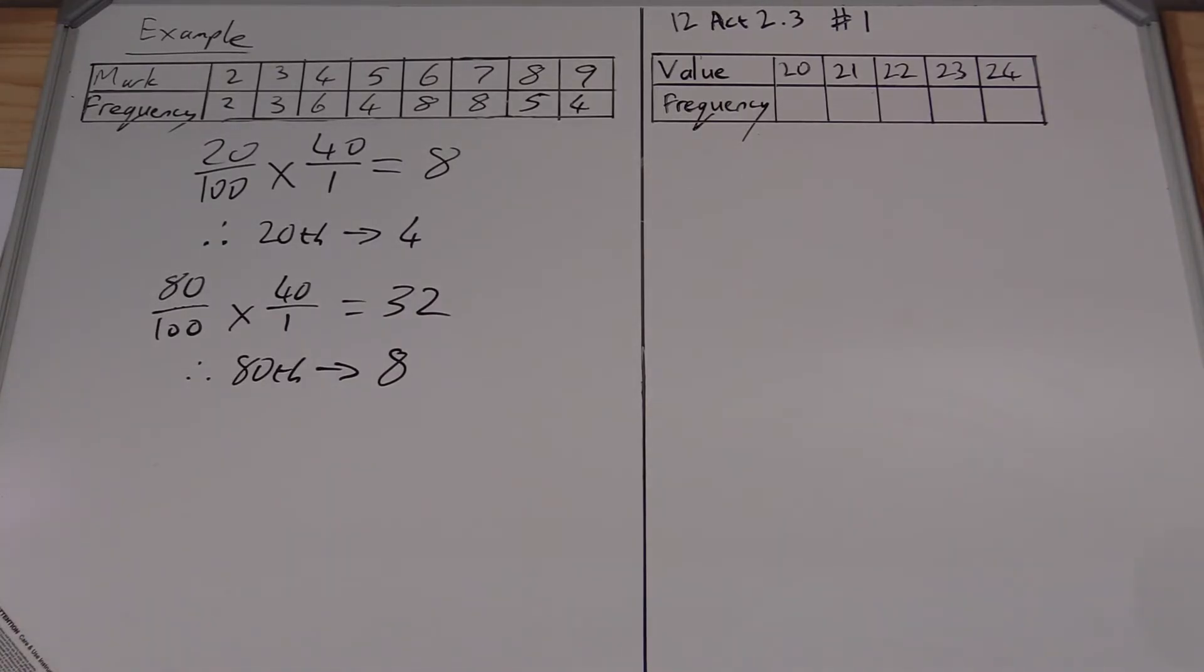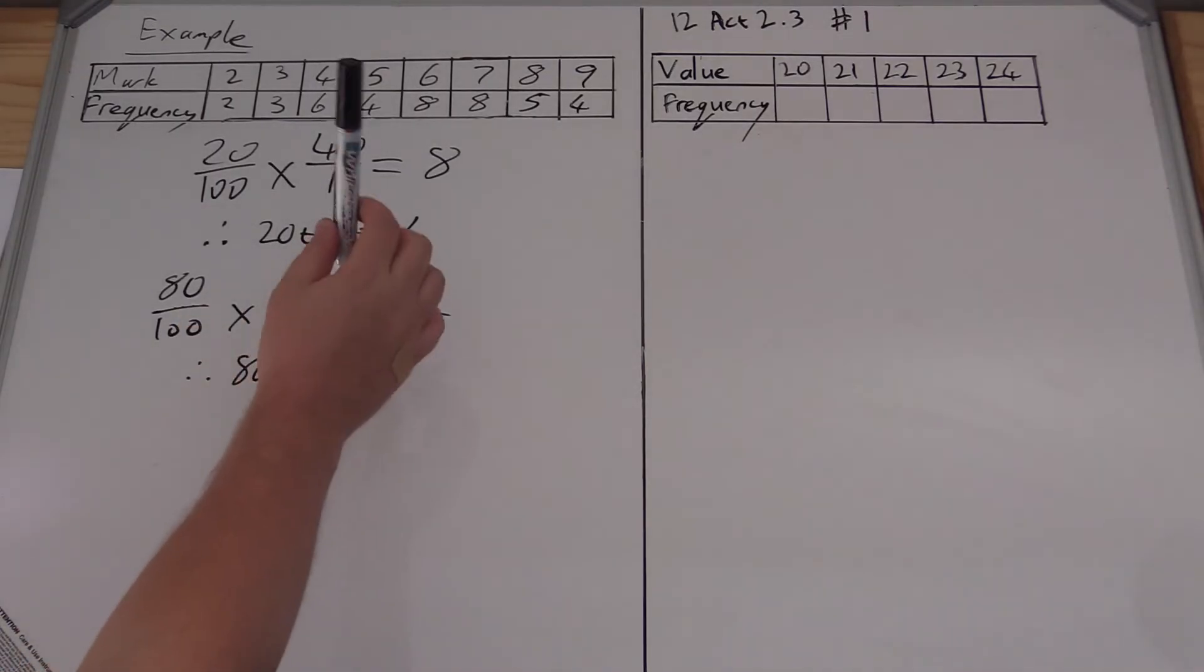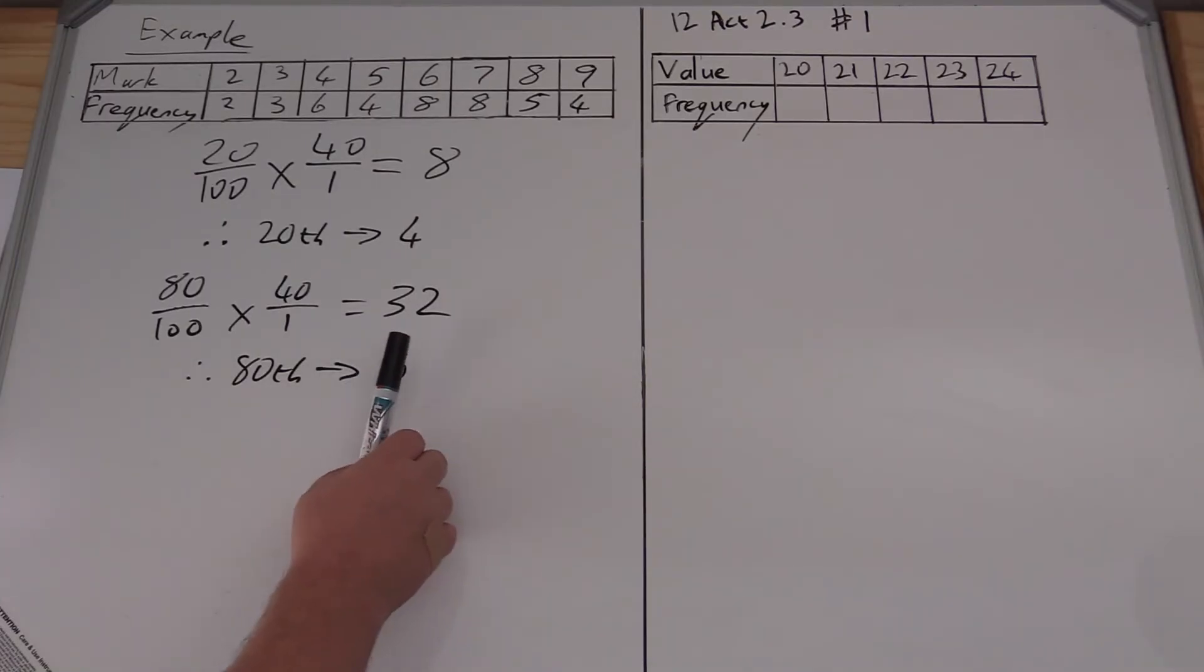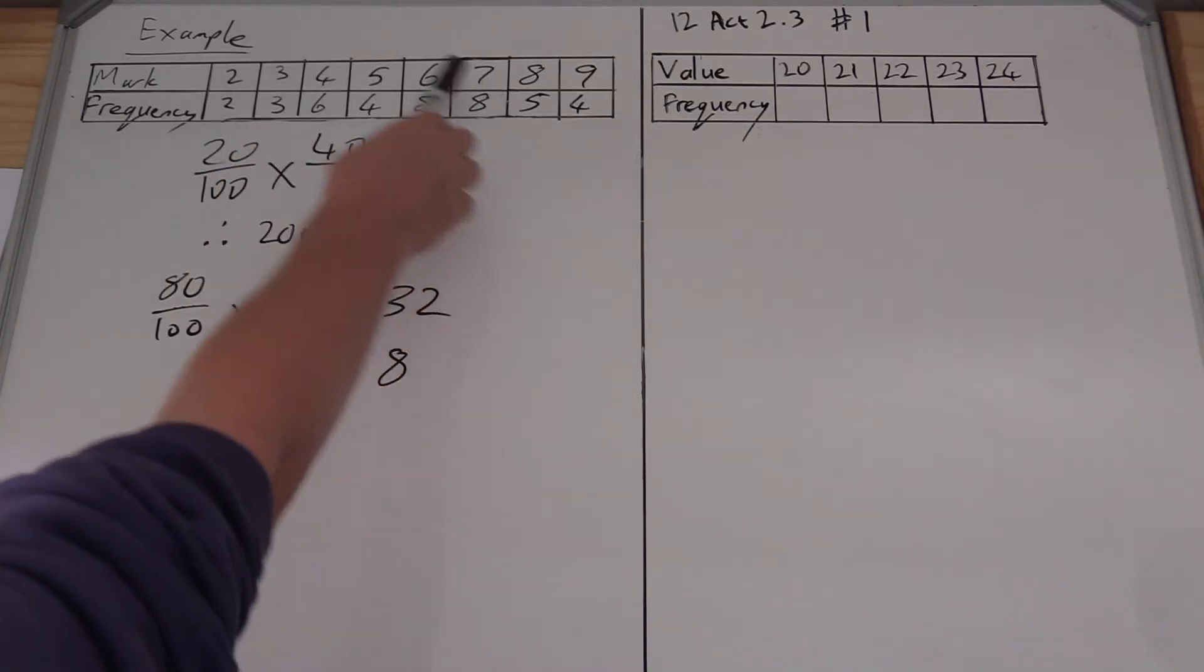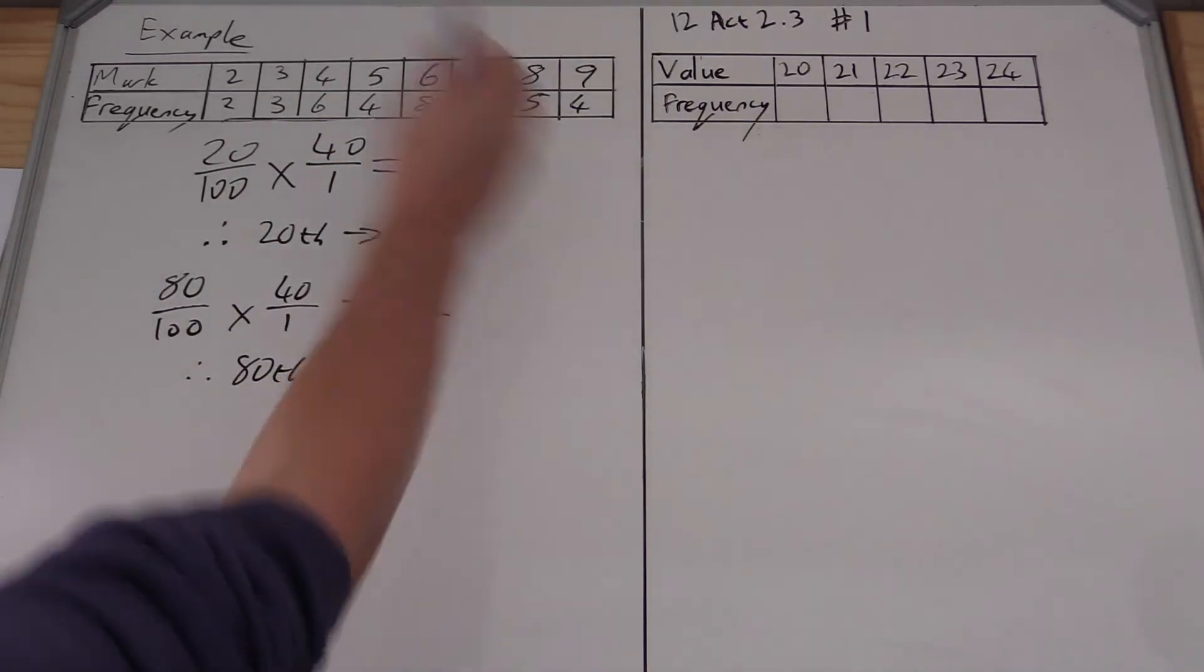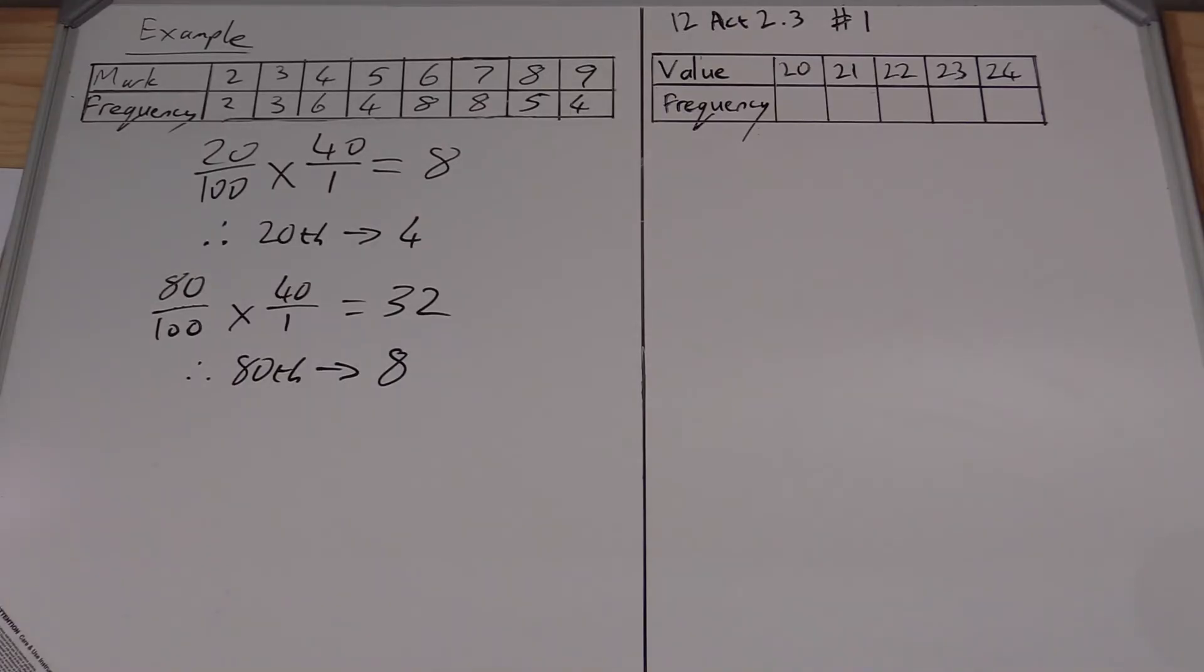So what this really means is that at my 20th percentile, 20% of the data is less than 4. So 20% of the learners in this class got a mark lower than 4. If I'm looking at my 80th percentile, 80% of the learners achieved a mark of less than 8. So 80% here are scoring up until 7, and my 80th percentile is 8. Hopefully that clears it up a little bit.